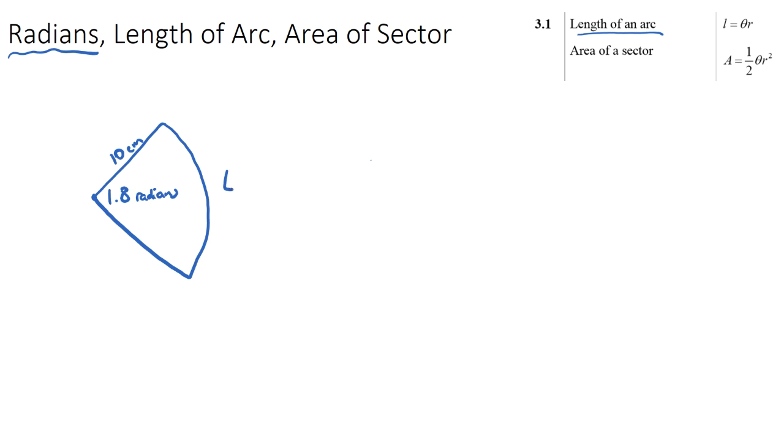If this is the case we just use the formula given in our formula booklet. The arc length will be theta multiplied by r, and we need to make sure theta is in radians. So our arc length, which is this distance here, will just be 10 times 1.8, which would be 18 centimeters.